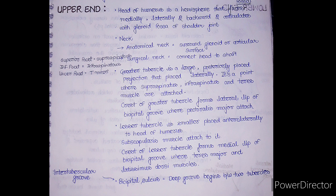The crest of the greater tubercle forms the lateral lip of the bicipital groove. The bicipital groove is the space between the greater and lesser tubercles. On the lateral lip of the bicipital groove, the pectoralis major muscle attaches. The lesser tubercle is smaller and placed anteromedially. If we compare the position of the lesser tubercle with the head of the humerus, it is positioned anterolaterally relative to the head.